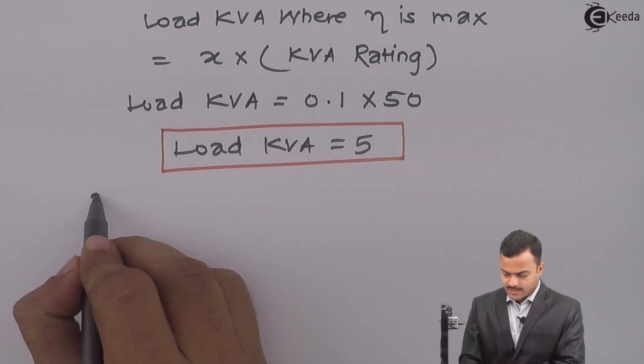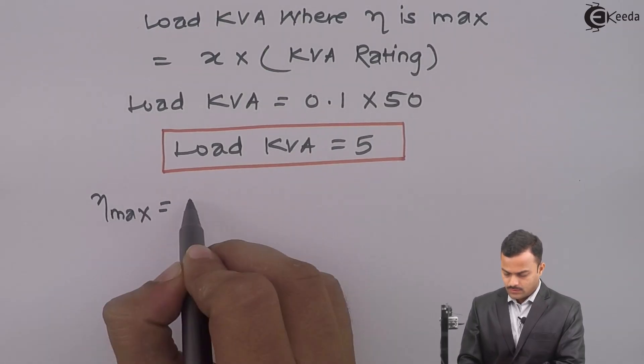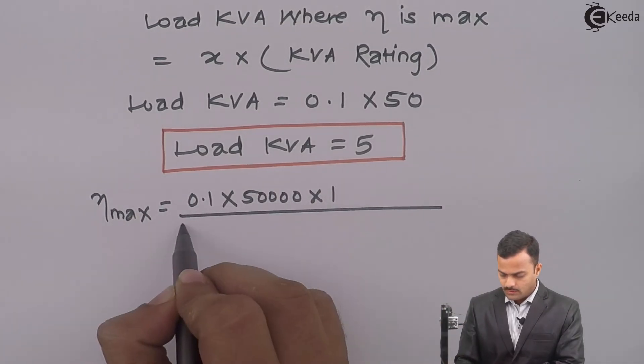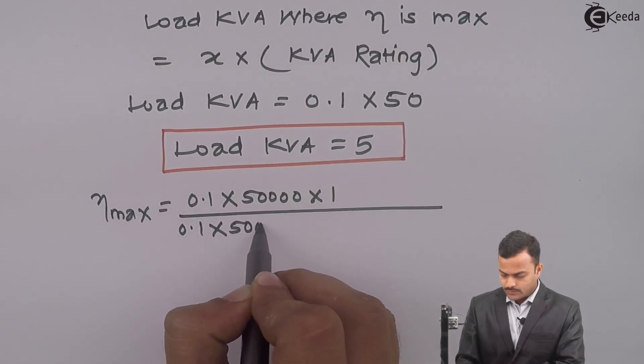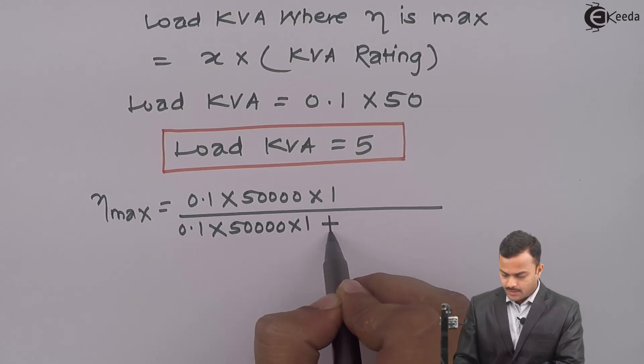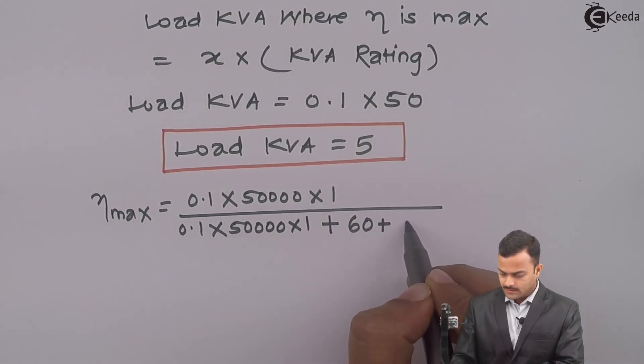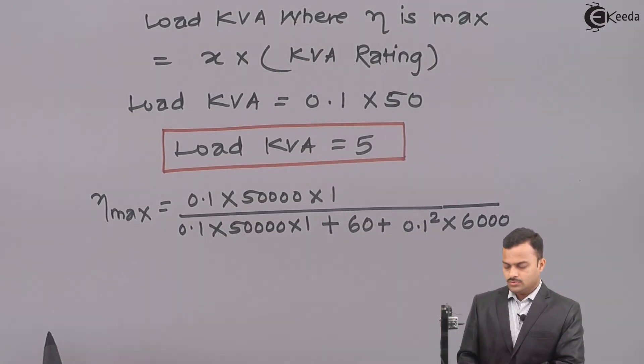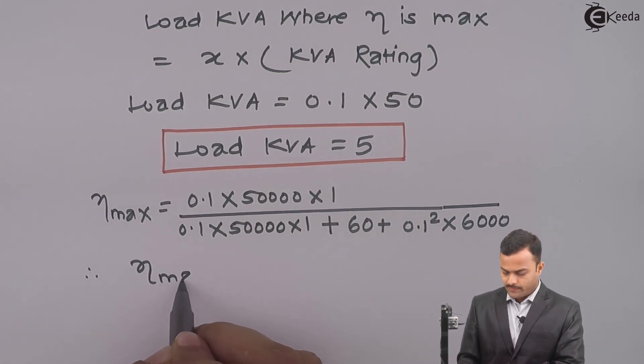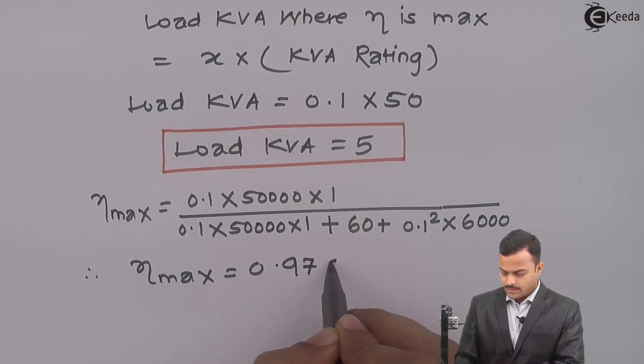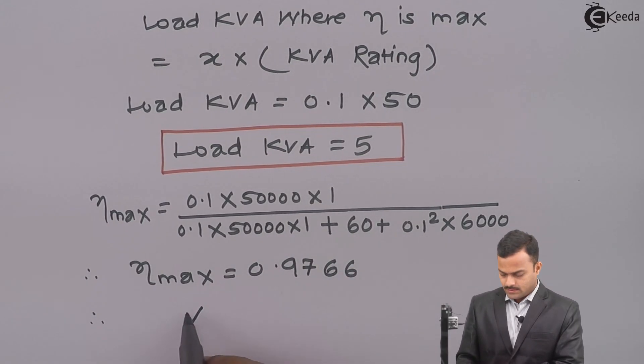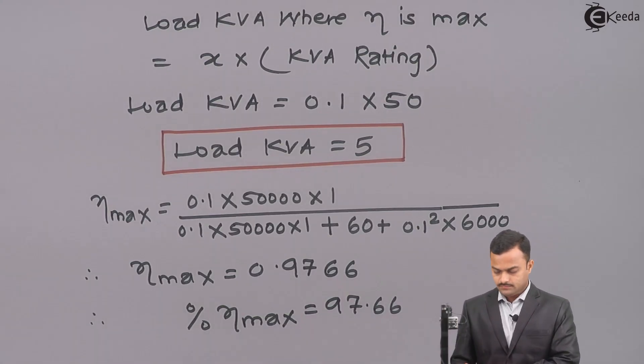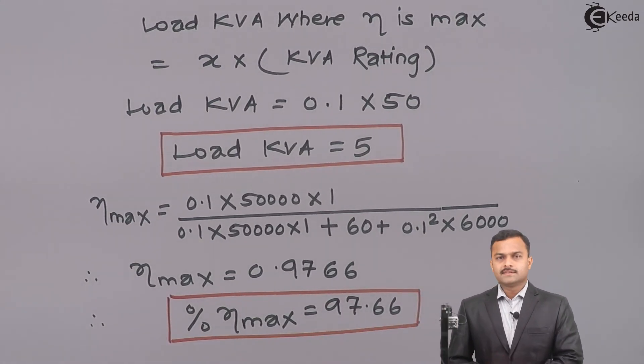Now maximum efficiency equals 0.1 multiplied by 50,000 multiplied by 1 upon 0.1 into 50,000 multiplied by 1 plus iron loss 60 plus 0.1 square and full load copper loss 6000. If you solve, maximum efficiency equals 0.9766, in percentage 97.66%.